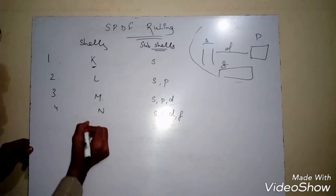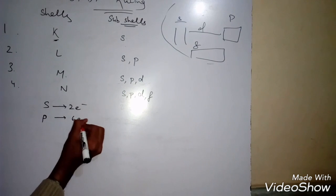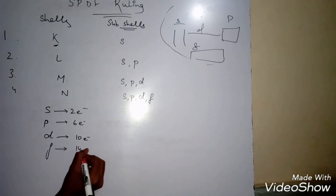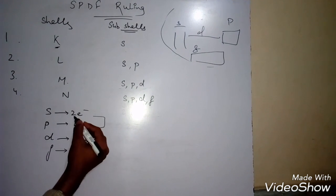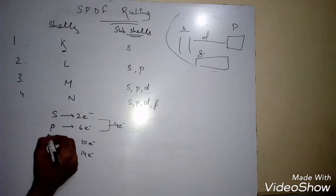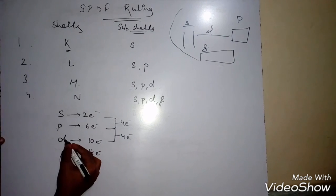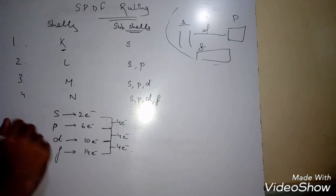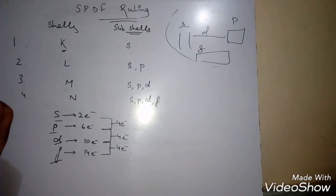So we have seen that S holds two electrons, P holds six electrons, D holds ten electrons, and F holds fourteen electrons. You can notice a pattern here: the difference between the electron counts of consecutive subshells is always four. S to P is +4, P to D is +4, and D to F is +4. So if you remember S holds two electrons, you can easily find the count for P, D, and F.